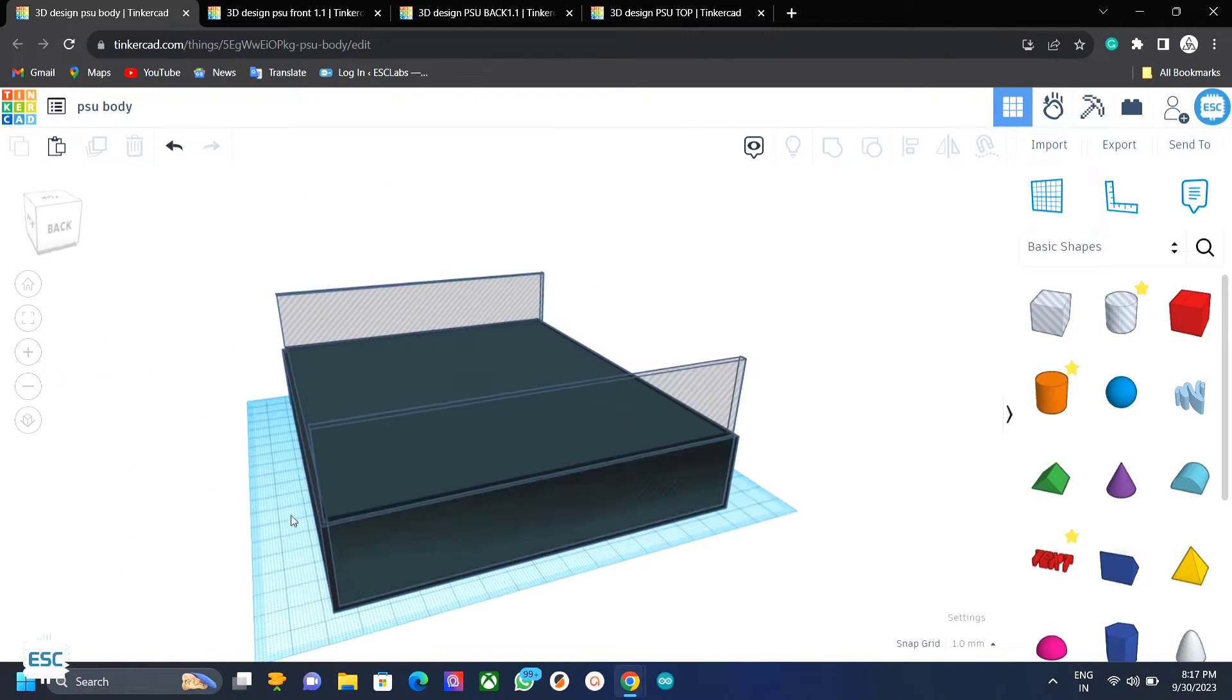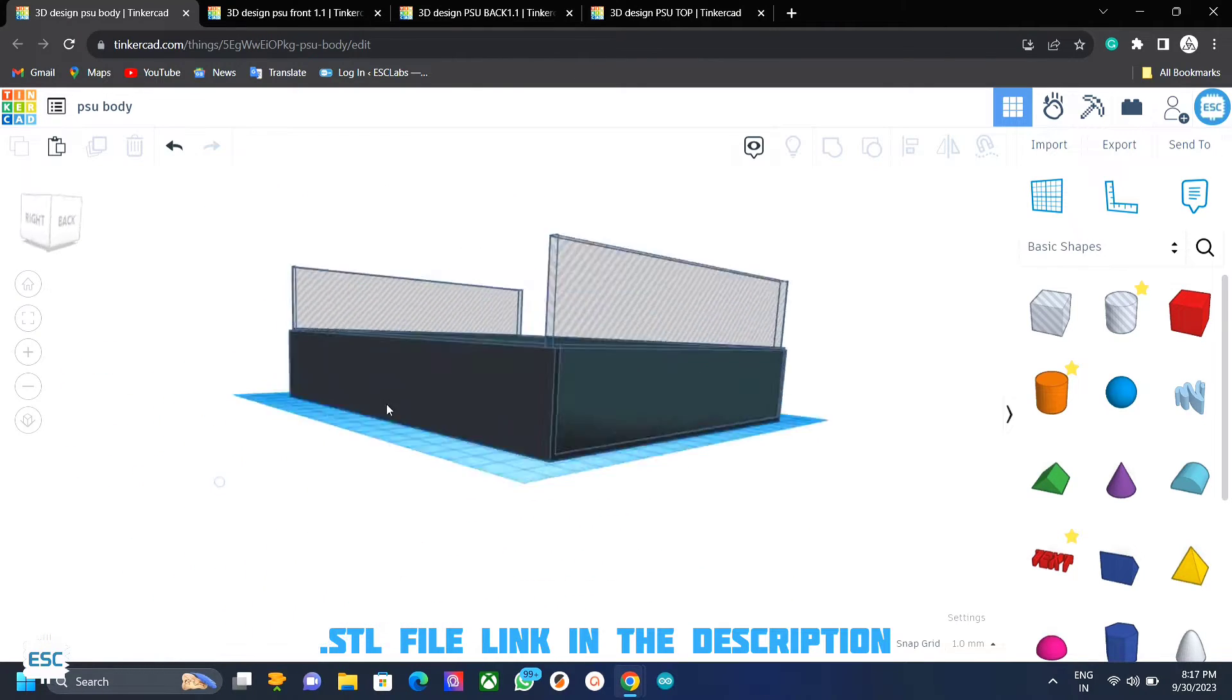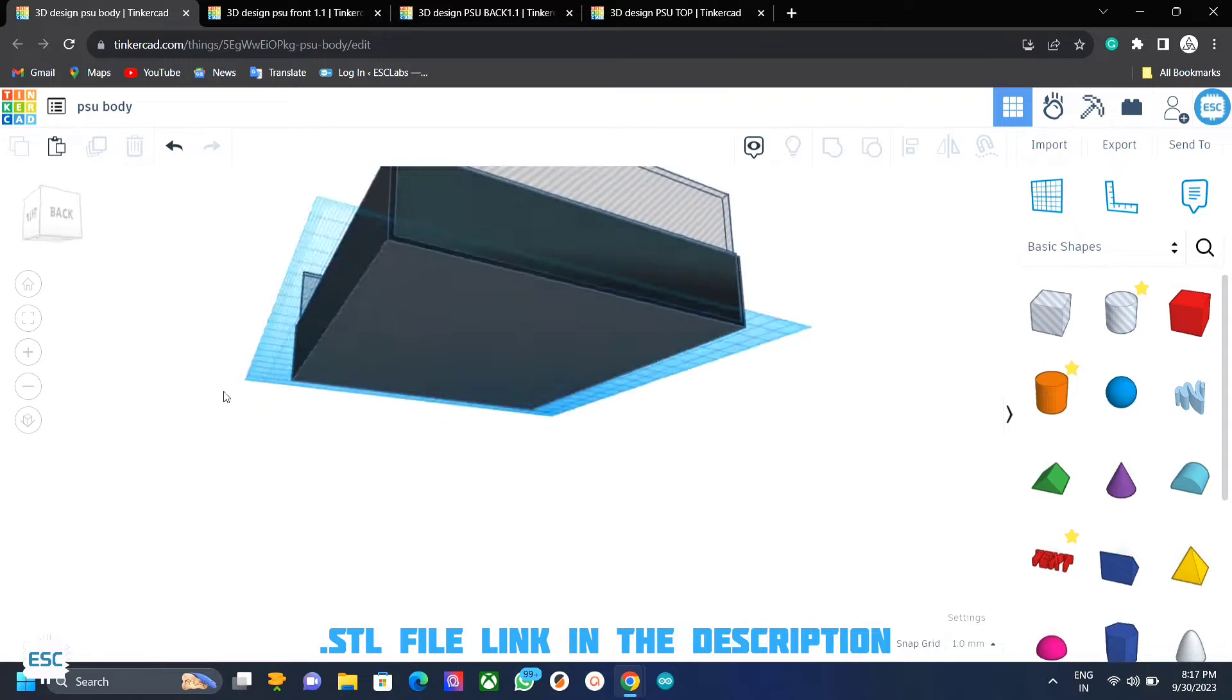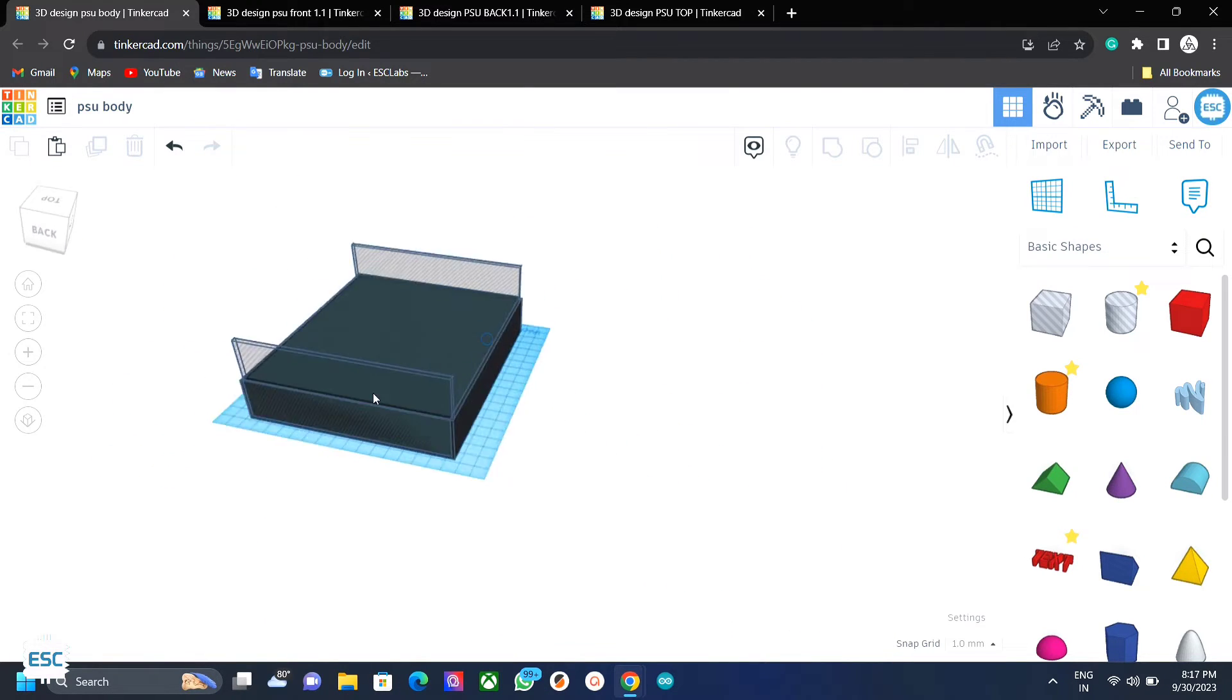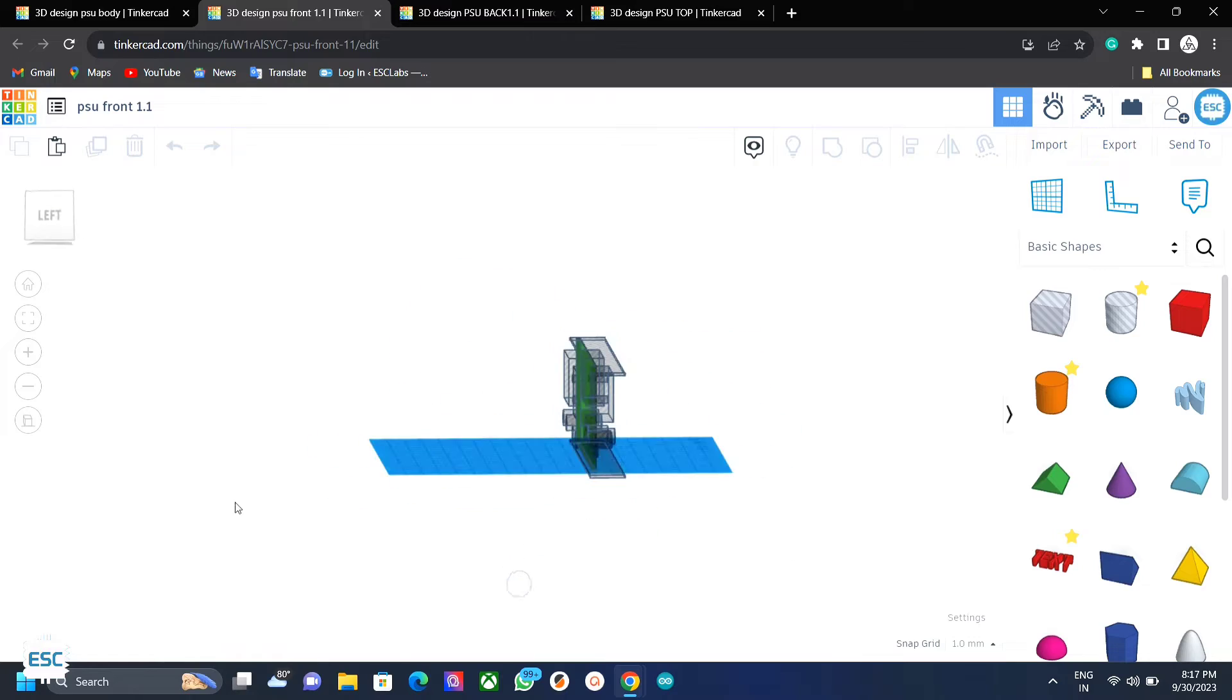To enclose everything, a designed enclosure is necessary. So I took dimensions of the parts and I designed the enclosure in Tinkercad. This has 4 parts: top side, bottom side, front panel and back panel.